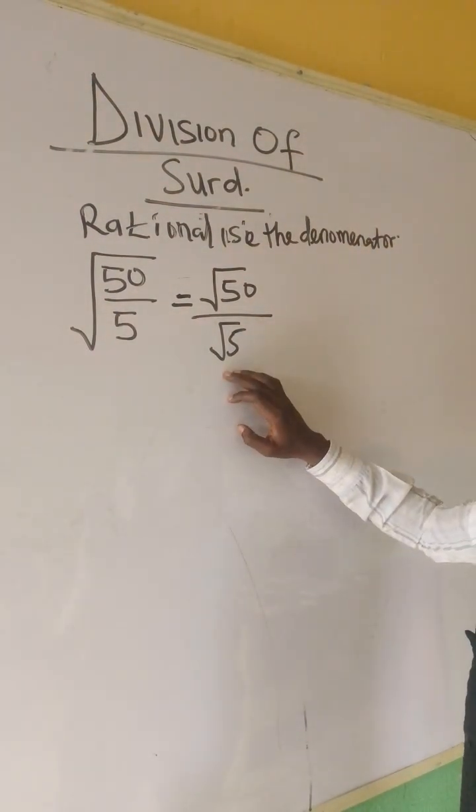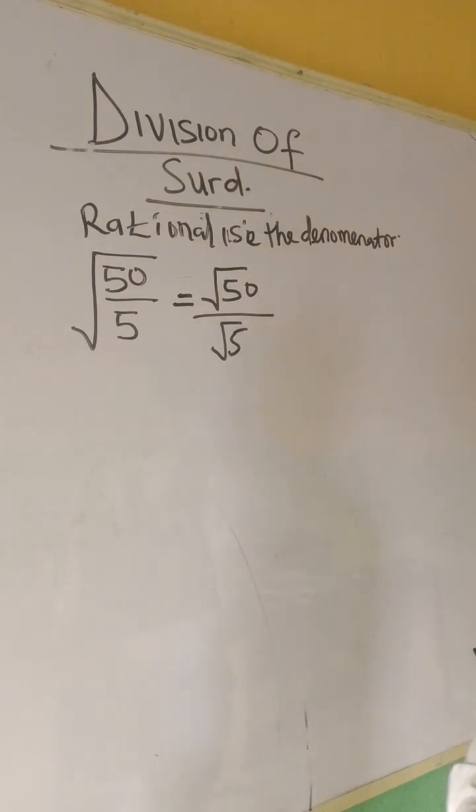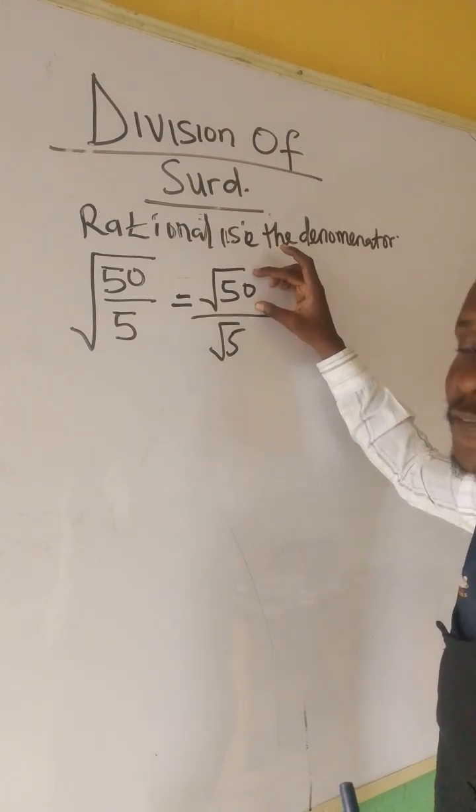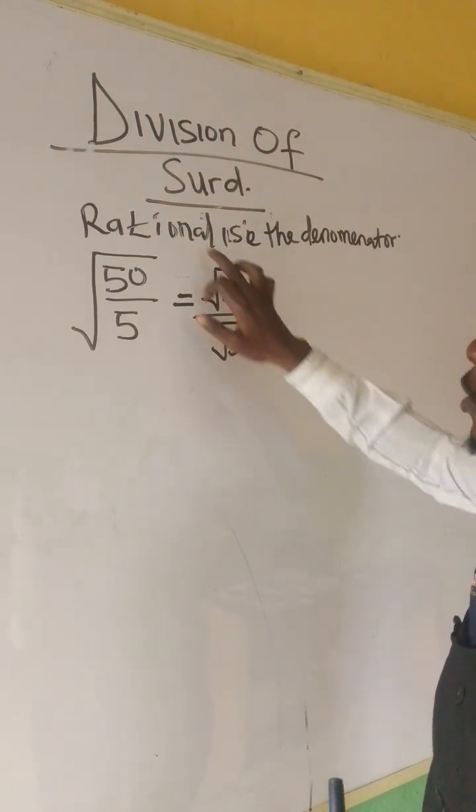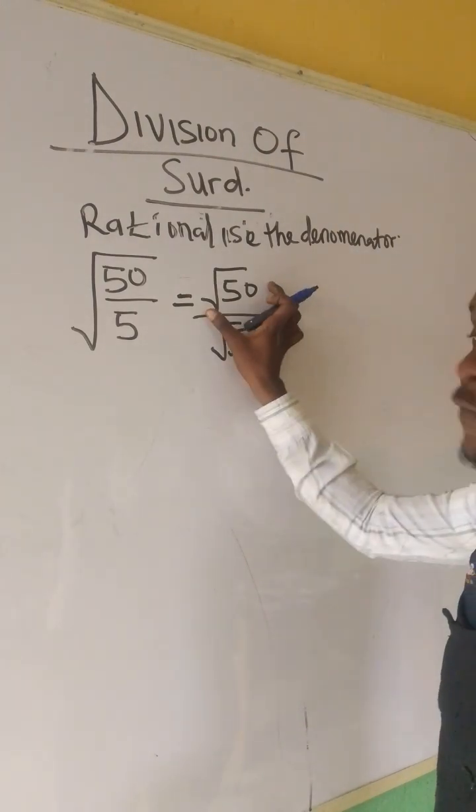So, these and these are the same. Now, how can we solve this? We can either simplify root 50 or we rationalize the denominator. So, let's hold on. Let's simplify root 50.